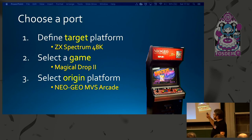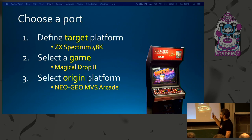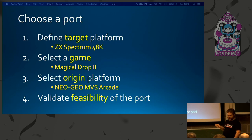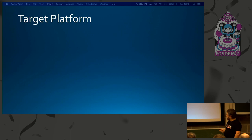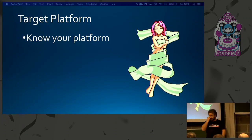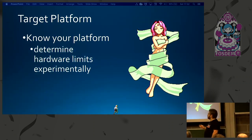You also need to select an origin, because that particular game can have been implemented on several other platforms. For some of you this might feel the other way around — like 3, 2, 1 instead of 1, 2, 3. That's the logic of someone doing a port for profit. For hobbyists, your hobby is about a specific microcomputer, so the order is usually 1, 2, 3. After you've selected all this, you have to be sure if it's actually possible to be done.